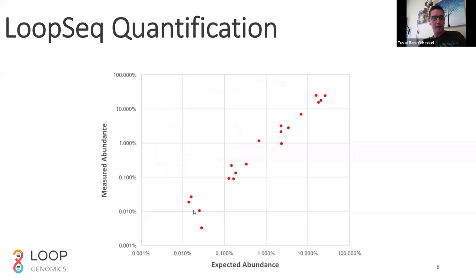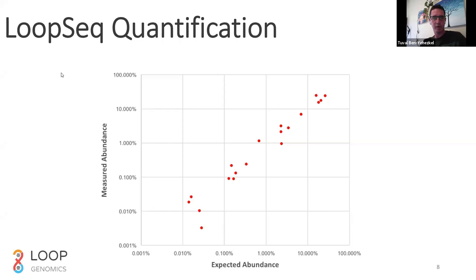We're also very quantitative because we're using UMIs — we can cancel out any PCR bias that might be introduced in the sample prep process. This shows the sequencing of a synthetic community with known abundances, demonstrating how the expected abundance matches the measured abundance. Because we have UMIs on each long read, if a certain clonotype or molecule is amplified faster than others, we can cancel that out by merging all reads belonging to the same UMI. We're essentially doing single-molecule counting at that point, so the technology is very quantitative.